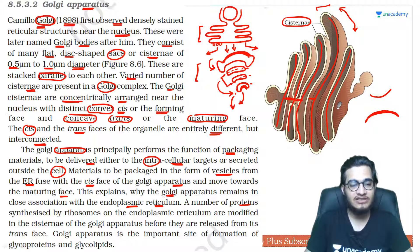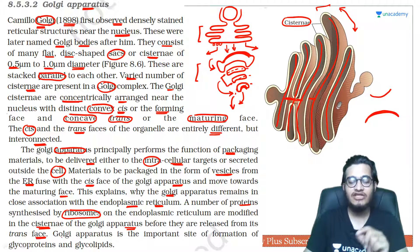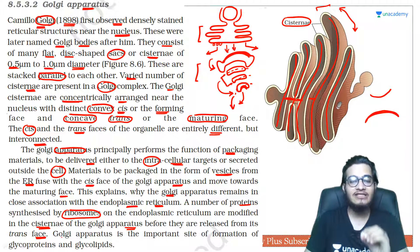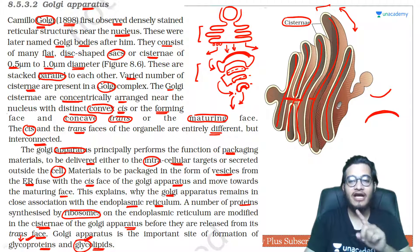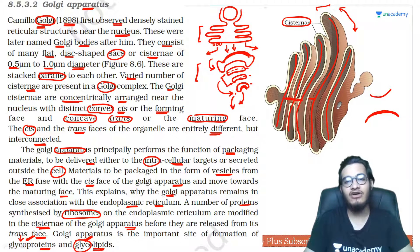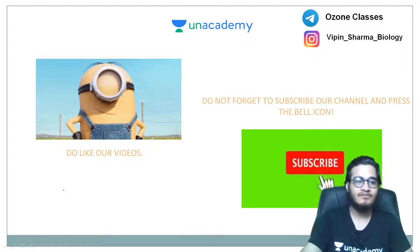A number of proteins synthesized by ribosomes on ER are modified in the cisternae of Golgi apparatus before they are released from the trans face. Yani jo aapke lipids hain aur jo aapke proteins hain, inko taiyar kiya jaata hai, inko modify kiya jaata hai GC ke andar — jise hum log bolte hain glycoprotein and glycolipid formation. Glyco ka matlab carbohydrate — yani protein par bhi carbohydrate aur lipid par bhi carbohydrate lagaya jaega Golgi ke andar. Is process ko aap log kehte hain glycosylation, yani addition of carbohydrate. Yeh aapke Golgi ke kaam hain.